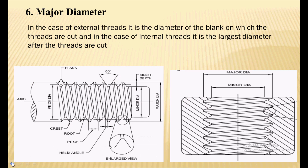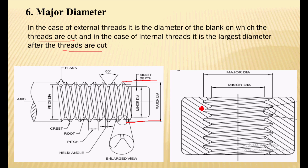Next is the major diameter. In case of external thread it is the diameter of the blank on which threads are cut — simply the diameter of the blank. In case of internal thread, it is the largest diameter after threads are cut. The largest diameter of the thread after cutting is nothing but major diameter in case of internal thread.